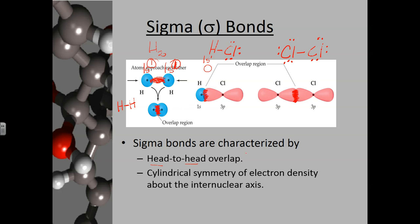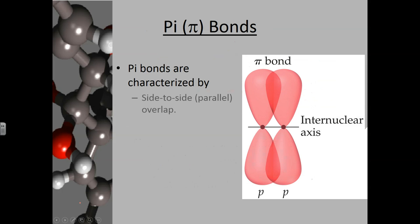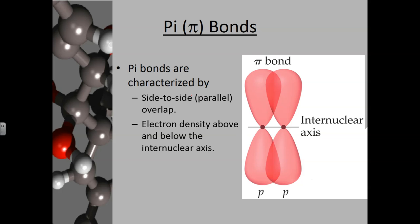Sigma bonds are characterized by head-to-head overlap, with cylindrical symmetry of electron density around the internuclear axis. Pi bonds are characterized by side-by-side or parallel overlap. When orbitals are parallel to one another, the electron density — where electrons are shared — is above and below the internuclear axis. Parallel overlap forms pi bonds; pi starts with P, parallel starts with P.